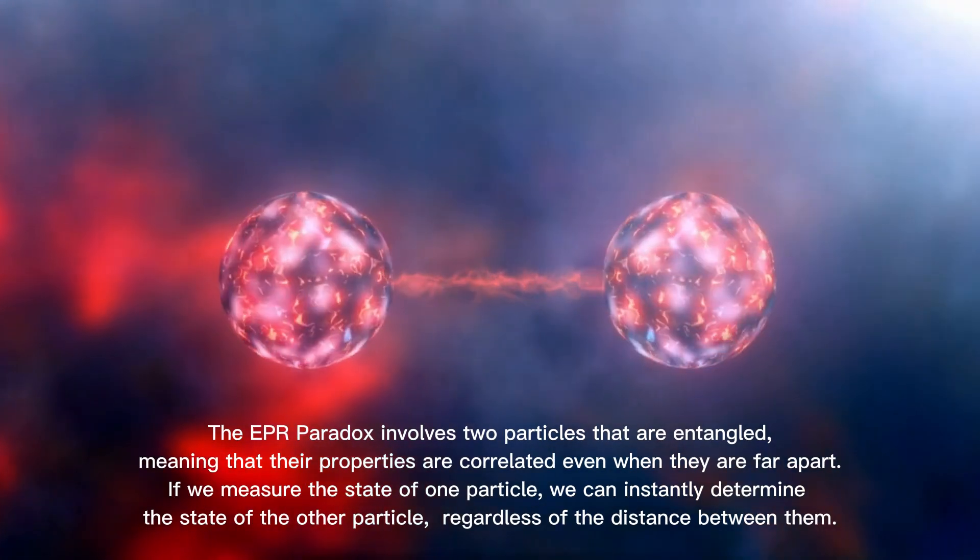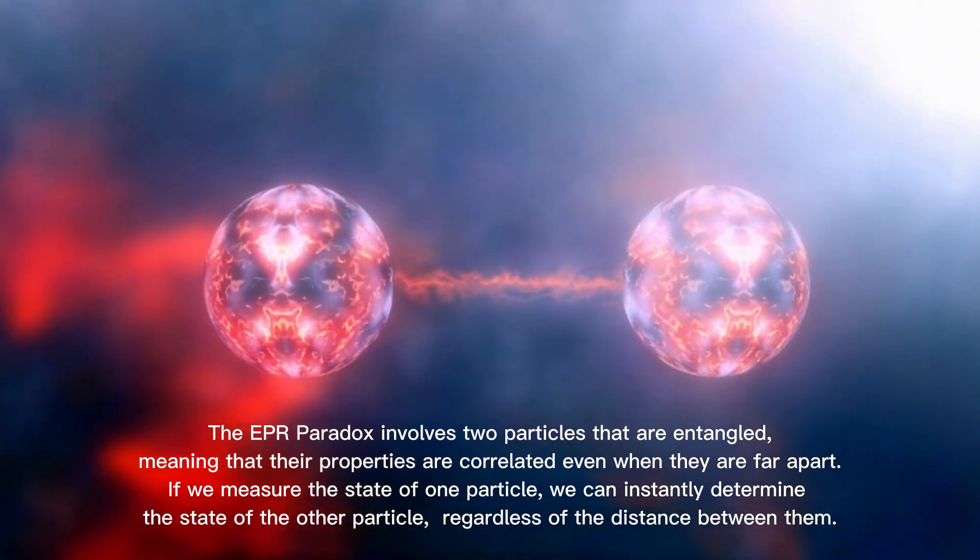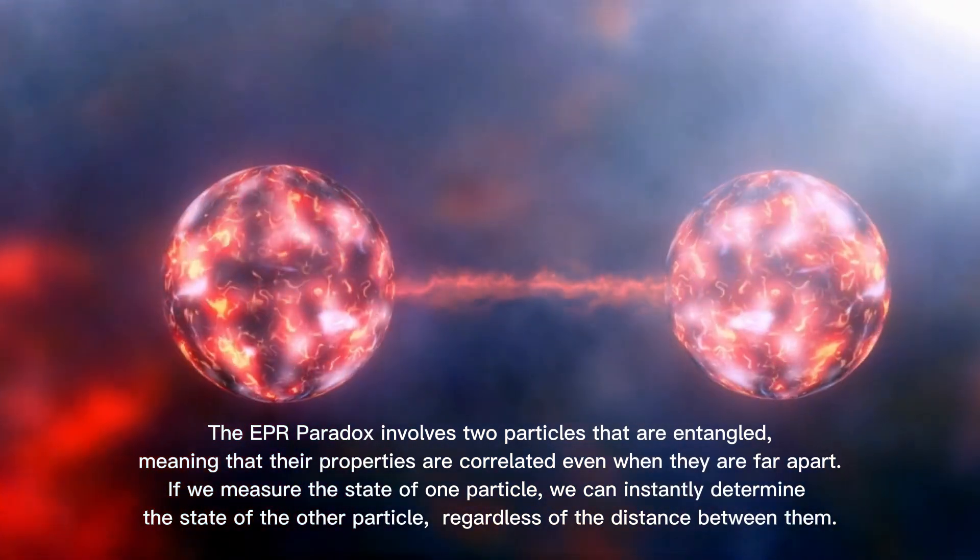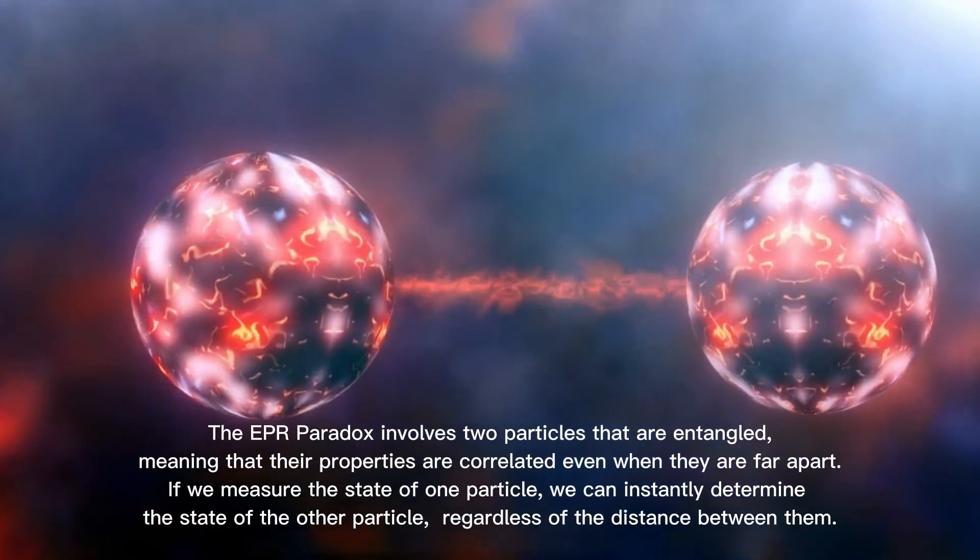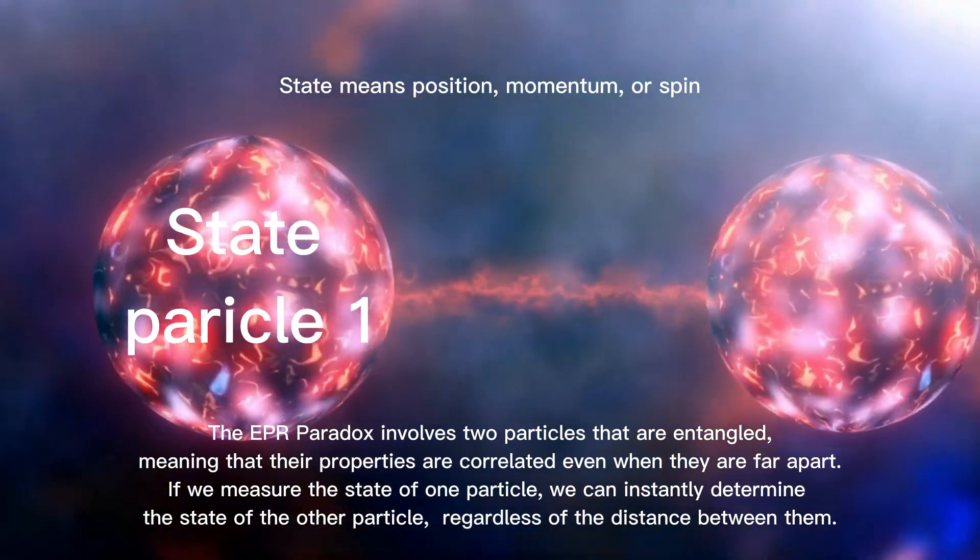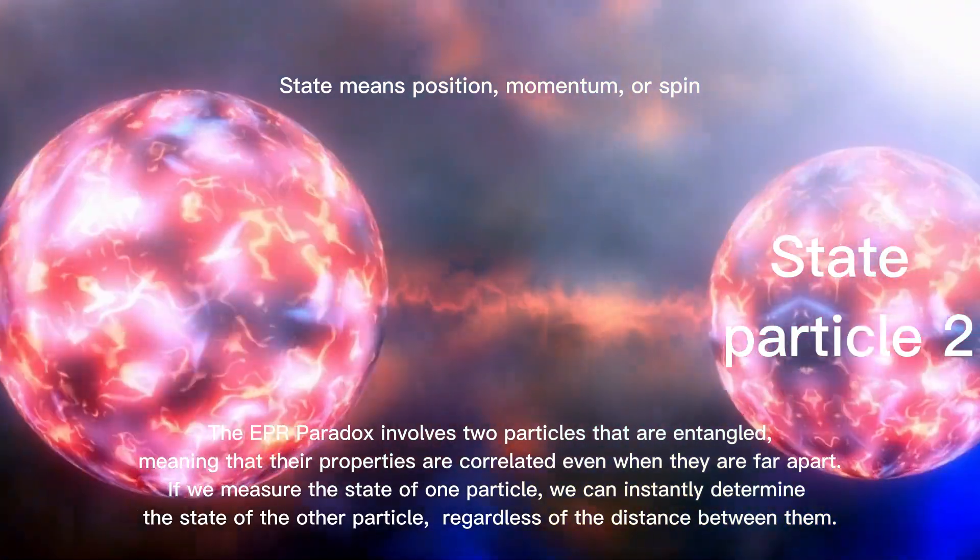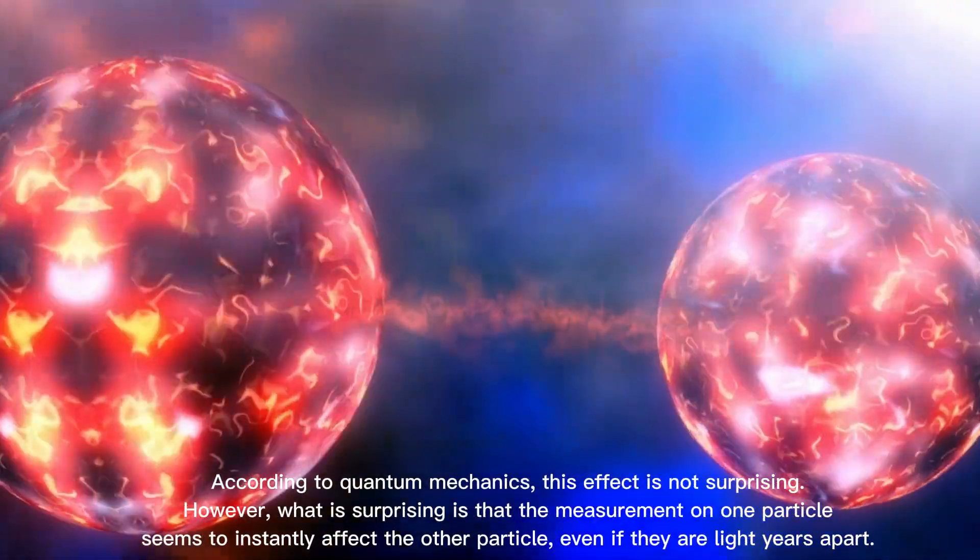The EPR Paradox involves two particles that are entangled, meaning that their properties are correlated even when they are far apart. If we measure the state of one particle, we can instantly determine the state of the other particle, regardless of the distance between them, according to quantum mechanics.